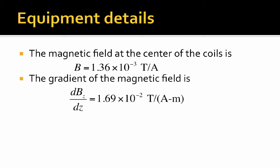And similarly, the gradient of the magnetic field, dB/dz, equals 1.69 times 10⁻² tesla per amp meters. So if we multiply this by amps, by the current, we get tesla per meter.